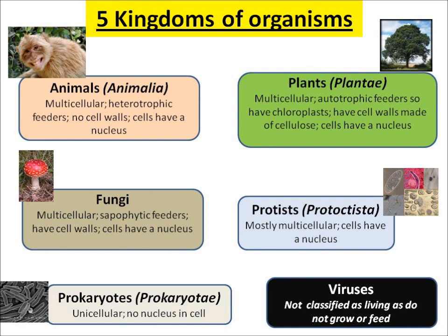There are five kingdoms of organisms. Animals are multicellular and heterotrophic feeders, meaning they need to eat other things. They don't have cell walls but do have a nucleus in their cells. Plants are also multicellular but make their food by photosynthesis — they are autotrophic because they make their own food.